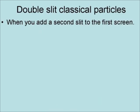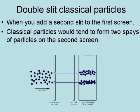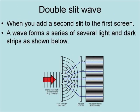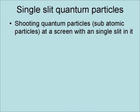When you add a second slit to the first screen, classical particles would tend to form two sprays of particles on the second screen. When a wave passes through two slits, it forms a series of several light and dark stripes, as shown below.